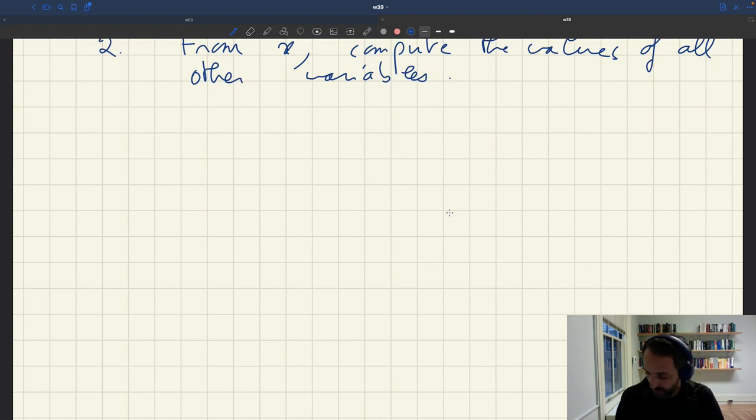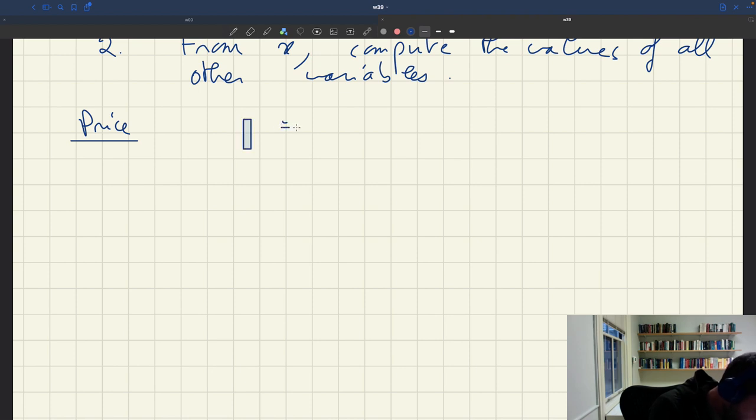So how are we going to back out the price once we have the tightness x? Well, we know that the price p is given by the price norm, p^n, which only depends on tightness. And so once I have tightness, I can plug it into my price norm and get the price.